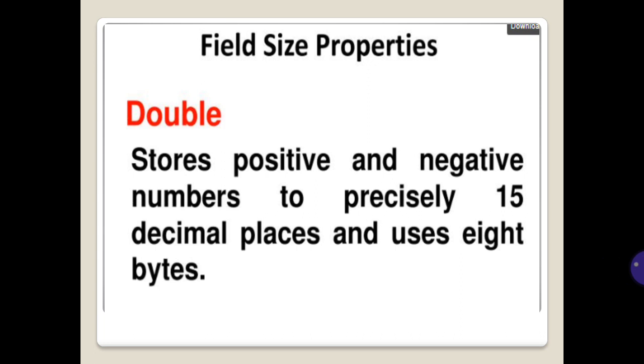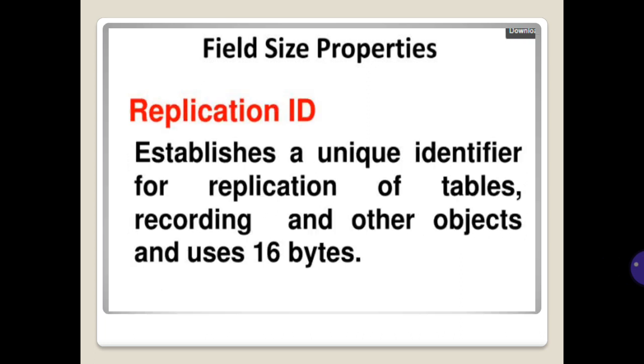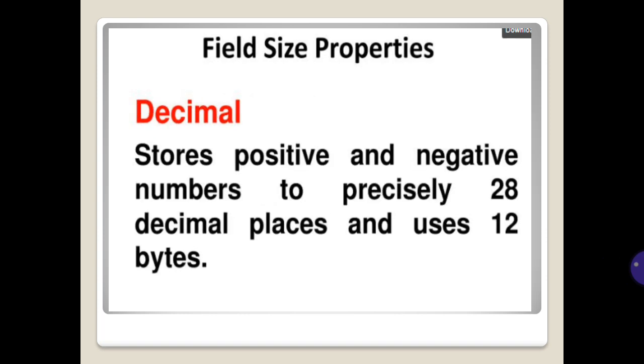Double: stores positive and negative numbers to precisely 15 decimal places and uses 8 bytes. Replication ID: establishes a unique identifier for replication of tables, records, and other objects and uses 16 bytes. Decimal: stores positive and negative numbers to precisely...